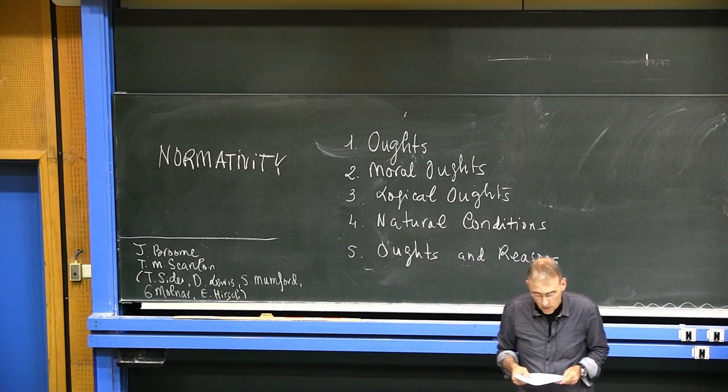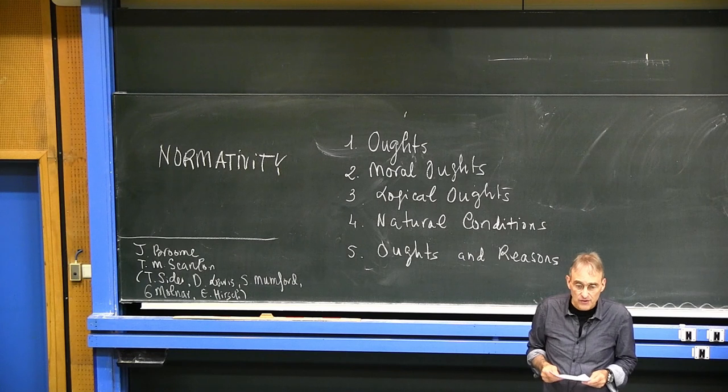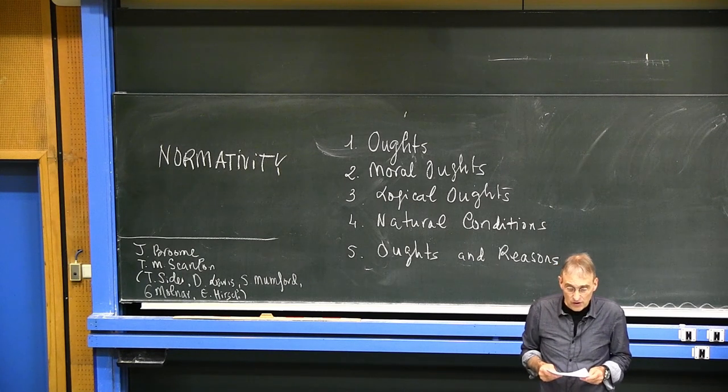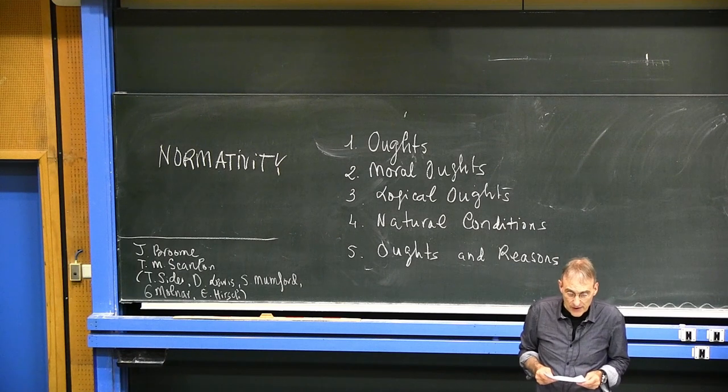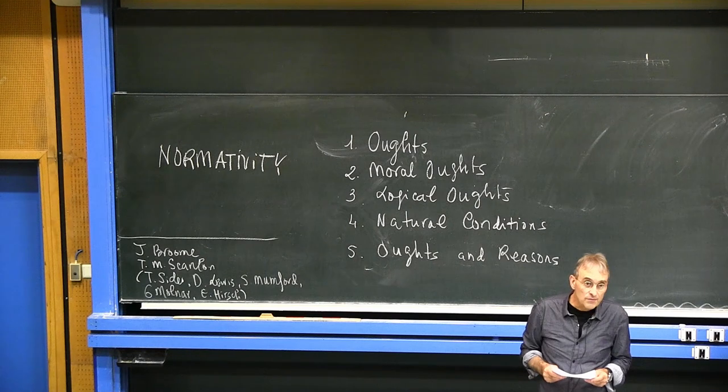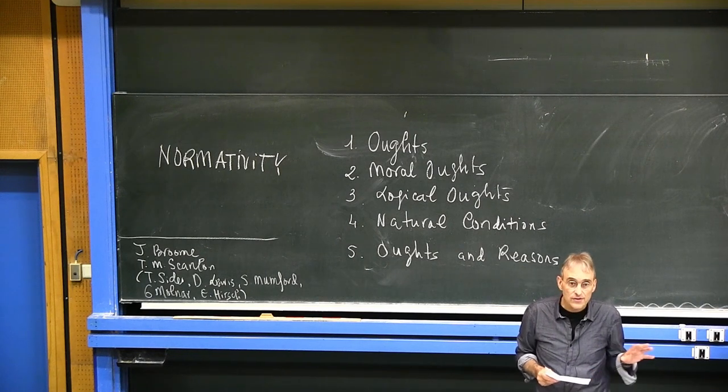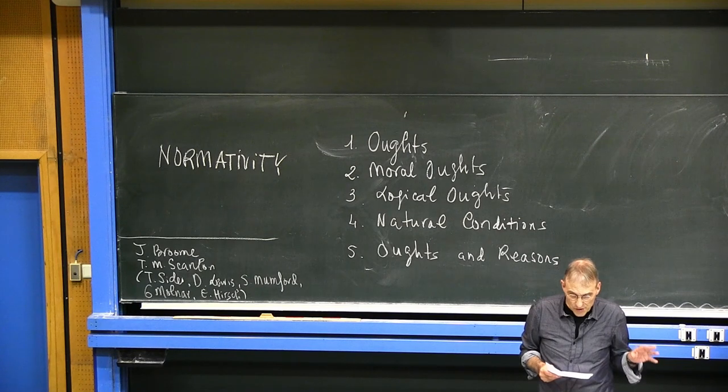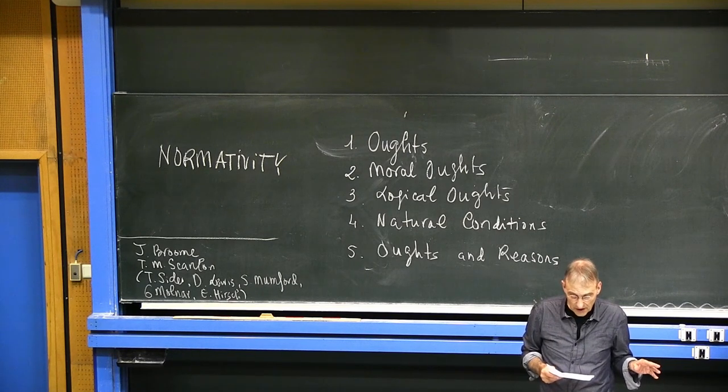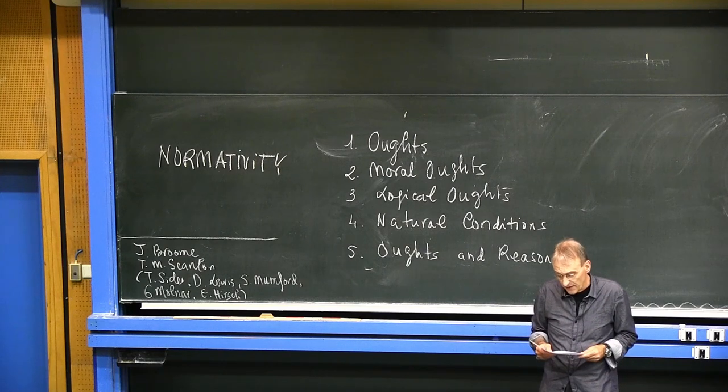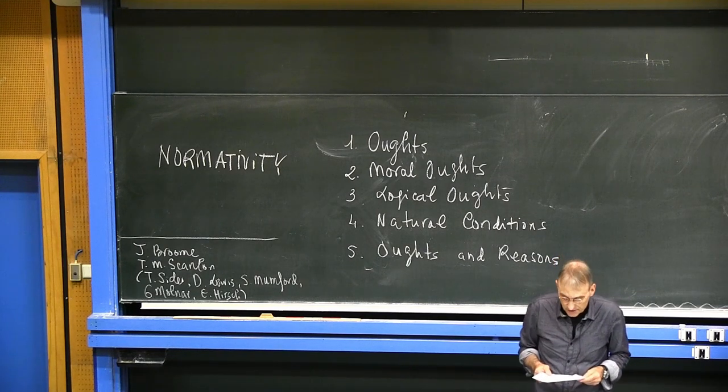Logic deals with the relation between premises and conclusions, not with the truth of the premises. Logical correctness is completely independent of the truth of the premises. Some conclusions make explicit the content of the premises. Such conclusions are conclusions of deductive arguments. Other conclusions go beyond the information given in the premises, the conclusions of non-deductive, inductive or plausible arguments.